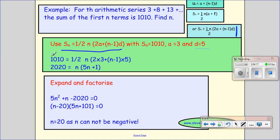I know the sum to N is 1010, a half, N I don't know, A I do know, 2 times 3, N I don't know, so N minus 1, and D I do know. Sorted that out, and I get this,